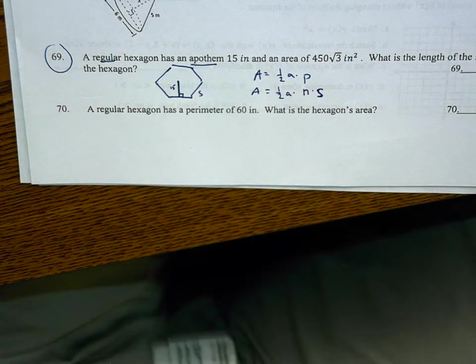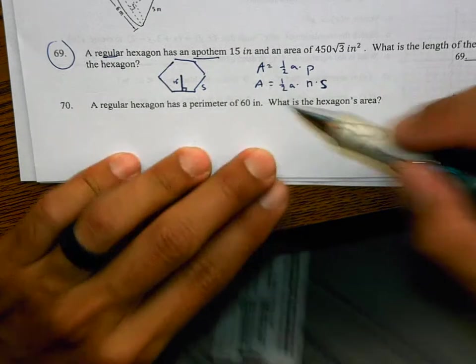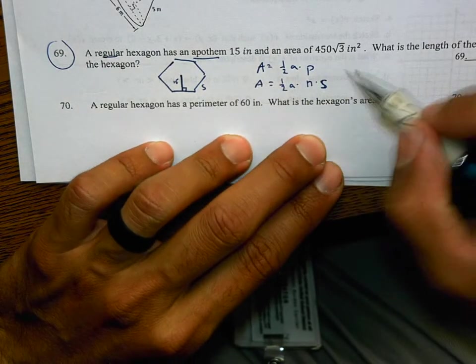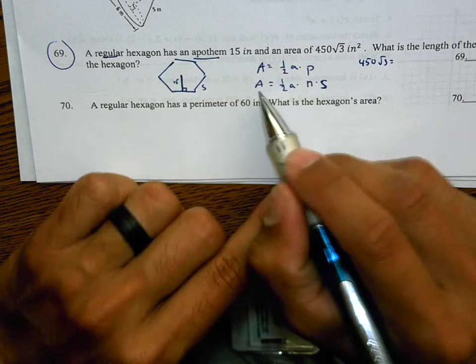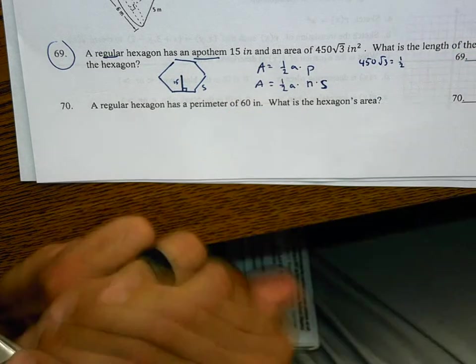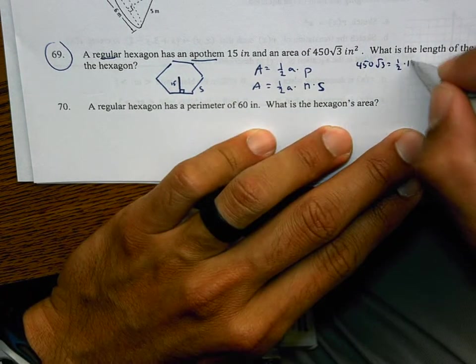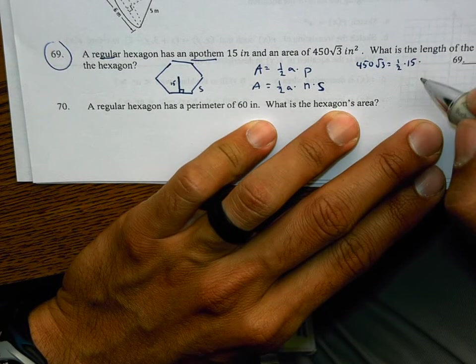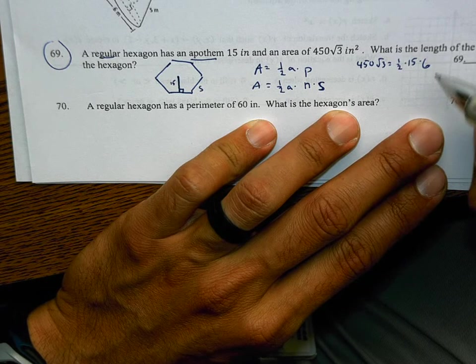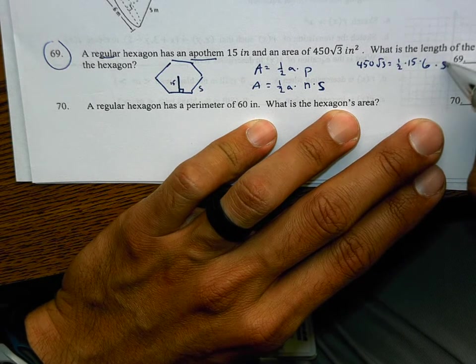And so now I'm going to replace a few of these things. The area is 450√3. The apothem is 15. The number of sides is 6 because it's a hexagon, times by the side length s.